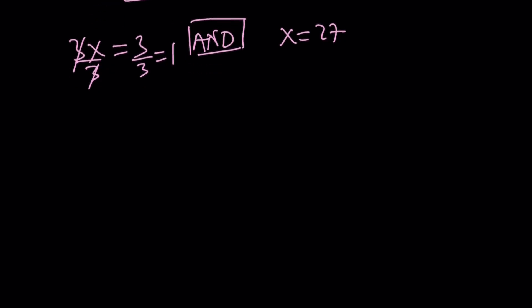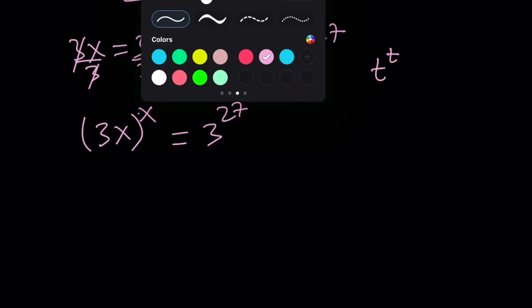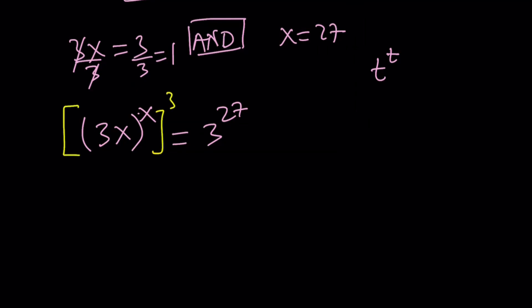Let's take a look. I have (3x)^x equals 3^27. This didn't work, but if I change the base and the exponent, I'll show you two approaches. First approach: try to make the base and the exponent the same, like t^t. Our base is 3x and exponent is x on the left-hand side, so it's easier to change the exponent. Let's raise both sides to the power 3.